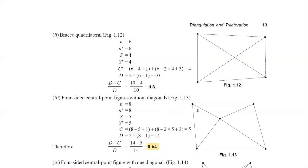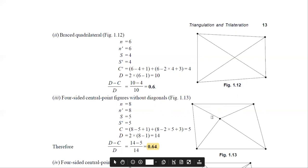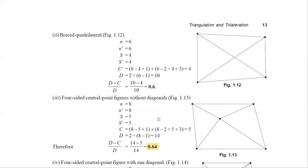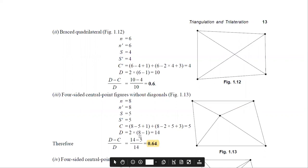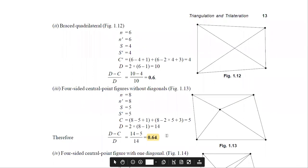For the third figure, there is one new station added, so the number of lines increases to eight and number of stations is five. N = N-dash = 8 and S = S-dash = 5. Substituting into the C formula gives C = 7. Capital D = 2 × (8 − 1) = 14. So (D − C)/D = (14 − 7)/14.